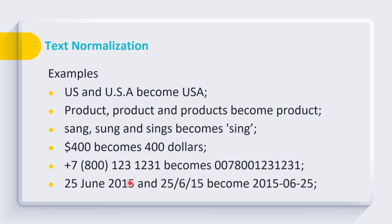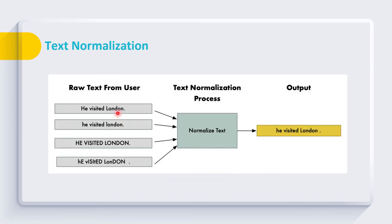In text normalization, we perform various steps. One of the most common steps is to convert the input text into either lowercase or uppercase so that all case variations can be removed. For example, the same sentence can be written in multiple ways, and in every case it represents the same information or same knowledge. So during normalization, all of these inputs will be converted into a uniform output.